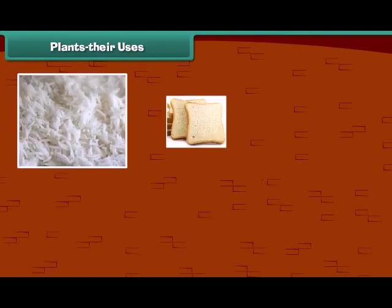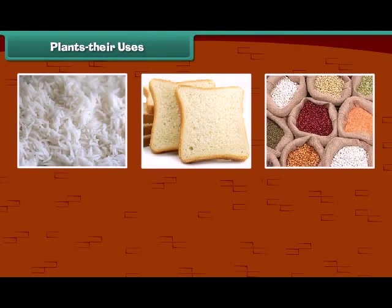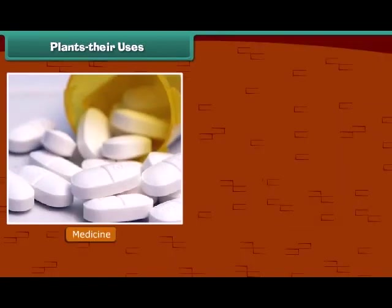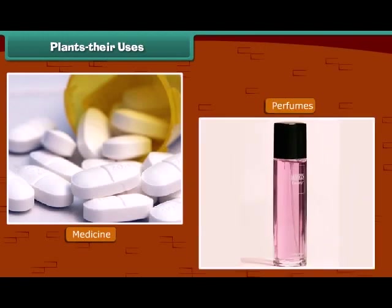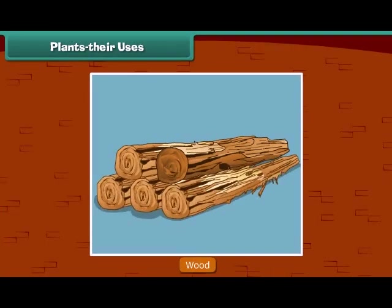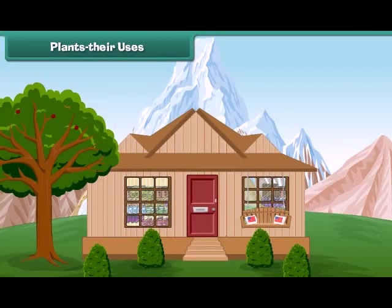Kids, as we know, we get our food items from plants. Besides food items, we also get many other things from plants. Many medicines and perfumes are made from plants. Plants also give us wood, and in some places houses are made of wood.